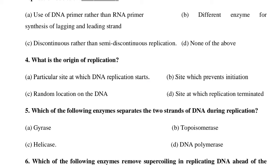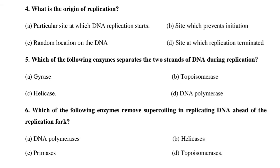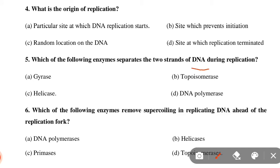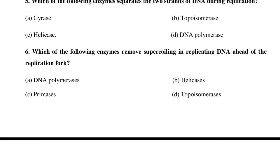Next MCQ: Which of the following enzymes separates the two strands of DNA during replication? Option A: Gyrase, Option B: Topoisomerase, Option C: Helicase, Option D: DNA polymerase. Option C is correct — helicase separates the two strands of DNA during replication.